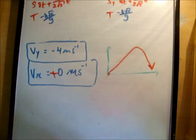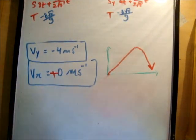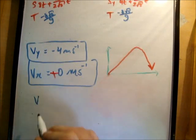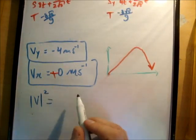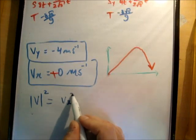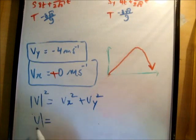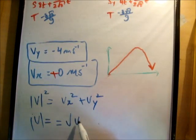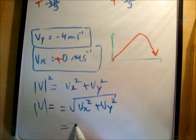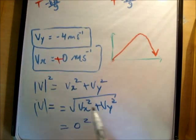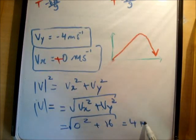So the next thing and final thing we need to do is get the magnitude of this, or its speed. Now, we know of course that the speed is the magnitude of the vector. So there's the vector v. And its magnitude squared is equal to v sub x squared plus v sub y squared. Therefore, the magnitude of v is equal to the square root of v sub x squared plus v sub y squared. So that means it's 0 squared plus 16 rooted. And that's 4 meters per second, which is correct.